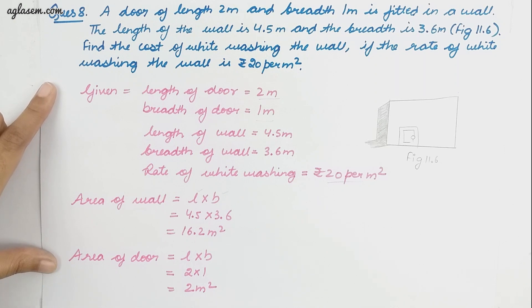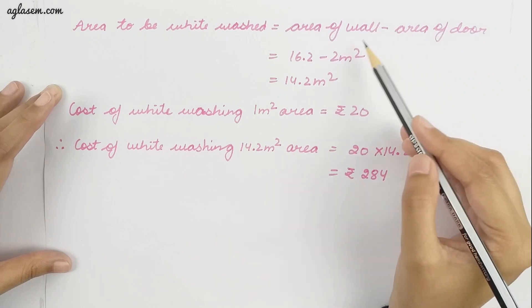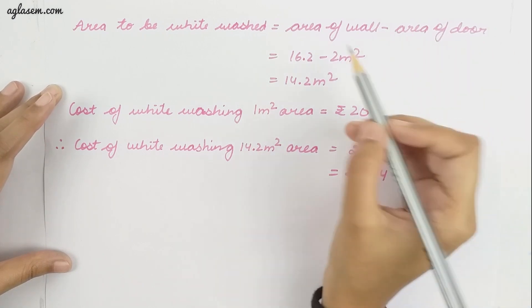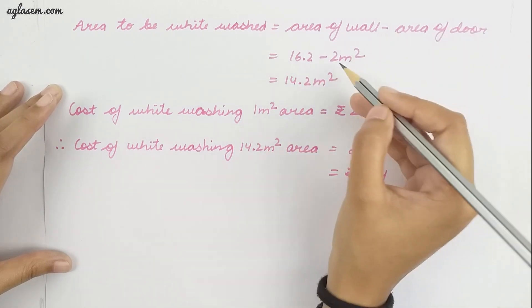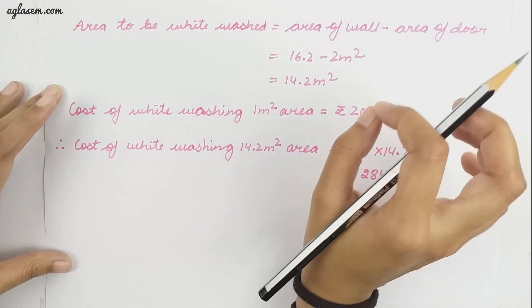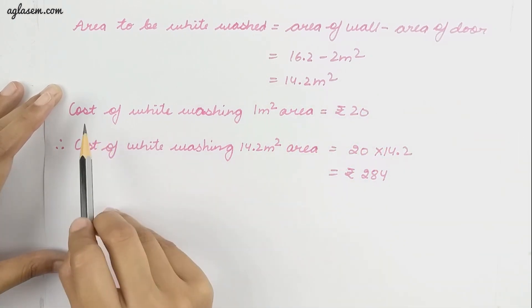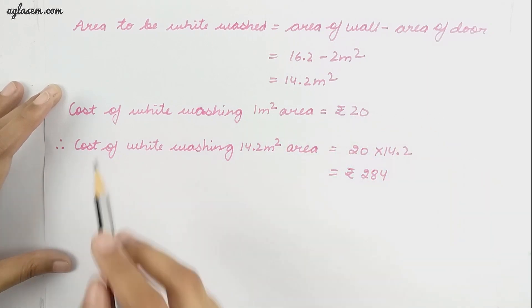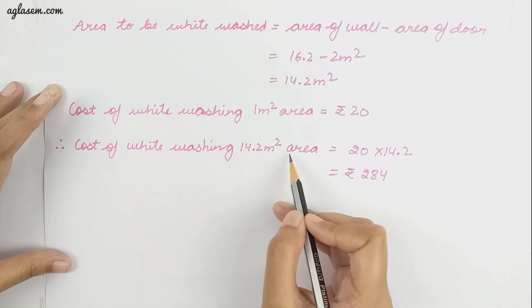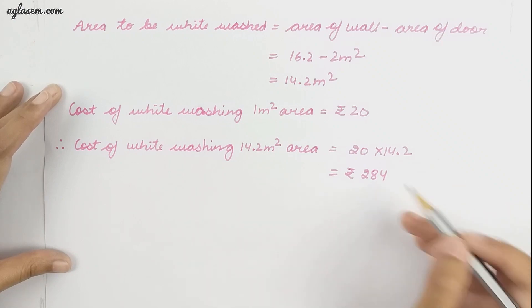The area of the door is 2 meter square. The area to be whitewashed equals area of wall minus area of door, that is 16.2 minus 2 equals 14.2 meter square. The cost of whitewashing 1 meter square is rupees 20, so cost of whitewashing 14.2 meter square is 20 into 14.2, which is rupees 284.